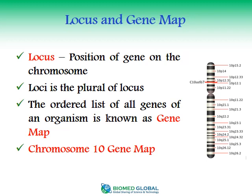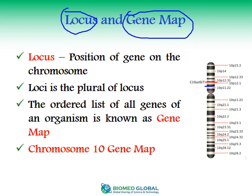Two more technical terms about chromosomes are locus and gene map. A locus is the position of a gene on the chromosome, and loci is the plural of locus. All genes are arranged on the chromosome. For example, on chromosome 10 of a human being, there is a centromere, a short P arm, and a longer Q arm, with genes present in an ordered sequence on both arms. The ordered list of all genes of an organism on a chromosome is known as a gene map.